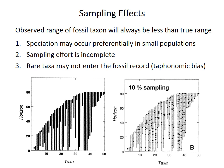Sampling is also incomplete, as illustrated in the graph below. The left panel shows the true ranges for some hypothetical species, and the right panel shows a modeled fossil record, which includes many gaps. The gray shows the true range, but the black dots are where species were actually sampled. This is with 10% sampling efficiency, which is probably an overestimate for certain rare groups.